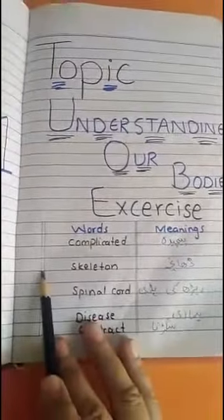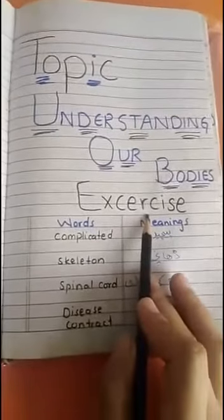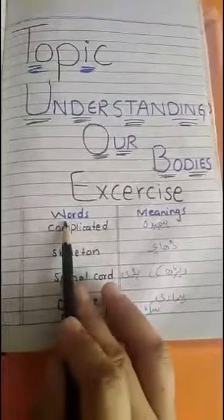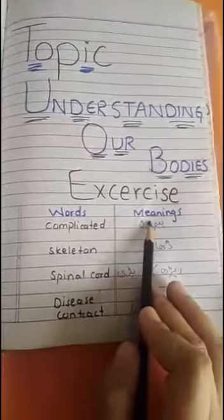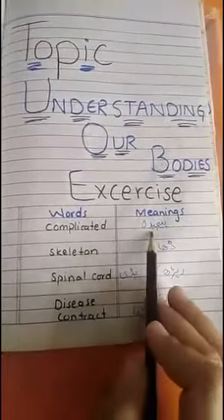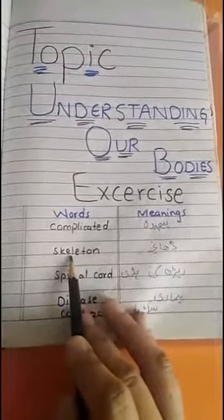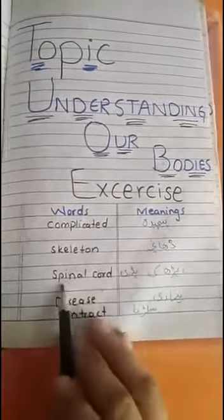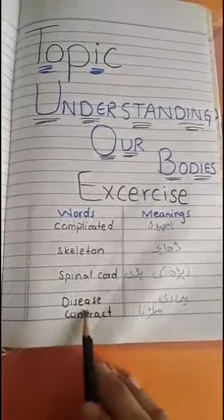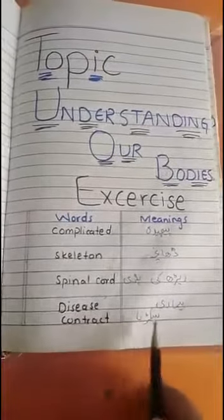Today we do the exercise of unit 1. First we do word meanings: complicated — pechida; skeletal — dancha; spinal cord — rir ki haddi; disease — bimari; contract — sukarna.